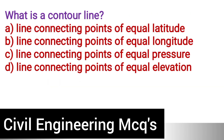Next question: What is a contour line? Option A: Line connecting points of equal latitude. Option B: Line connecting points of equal longitude. Option C: Line connecting points of equal pressure. Option D: Line connecting points of equal elevation. The correct answer is option D, line connecting points of equal elevation.